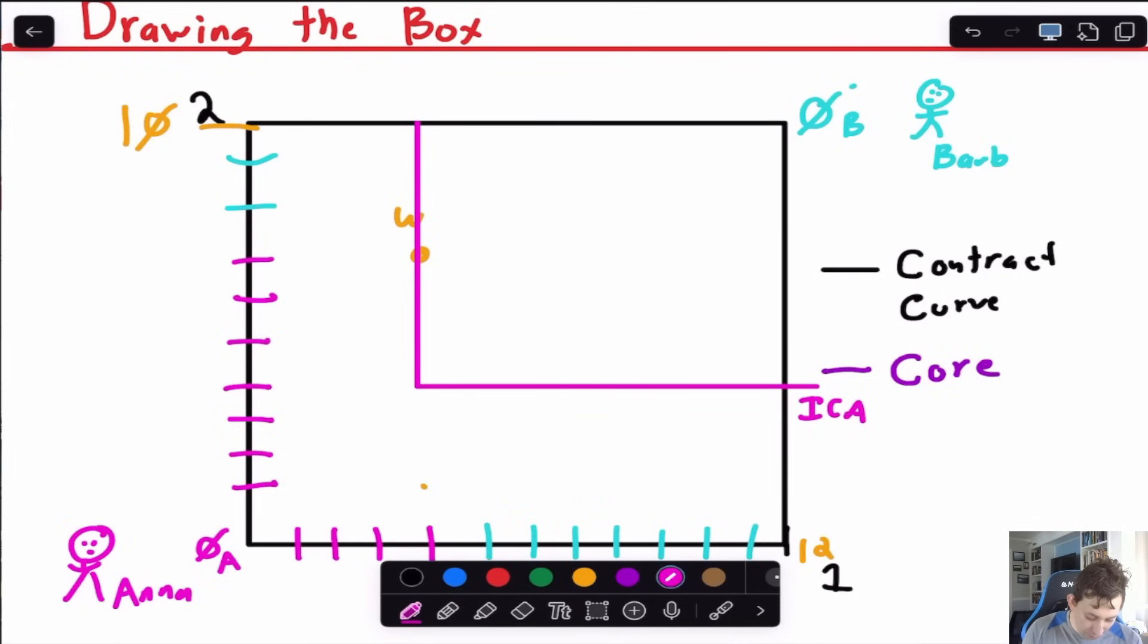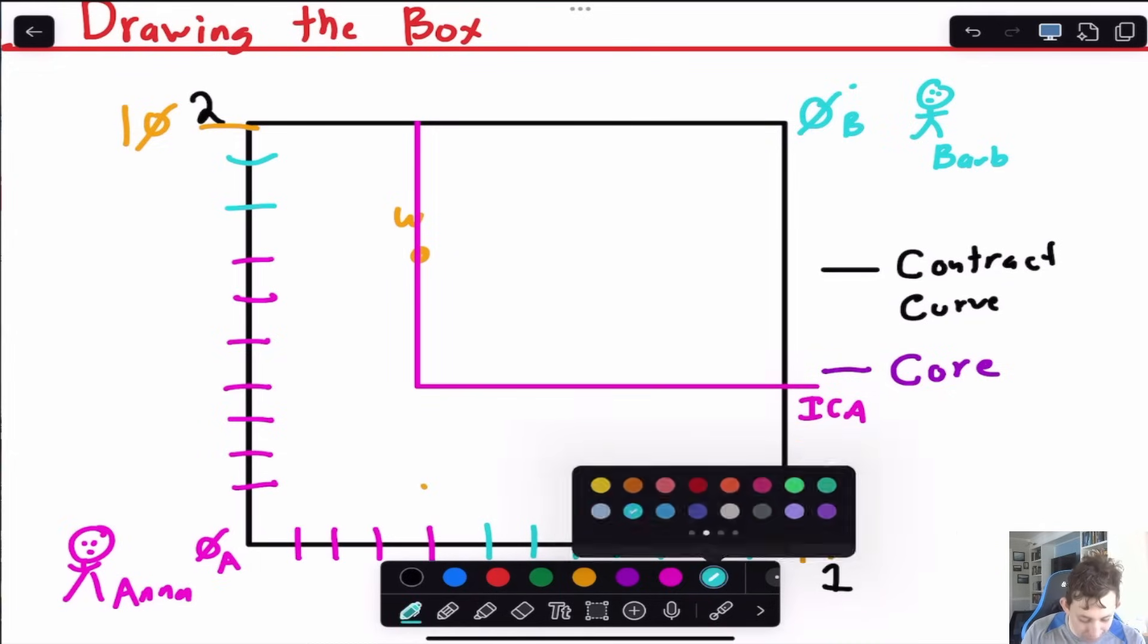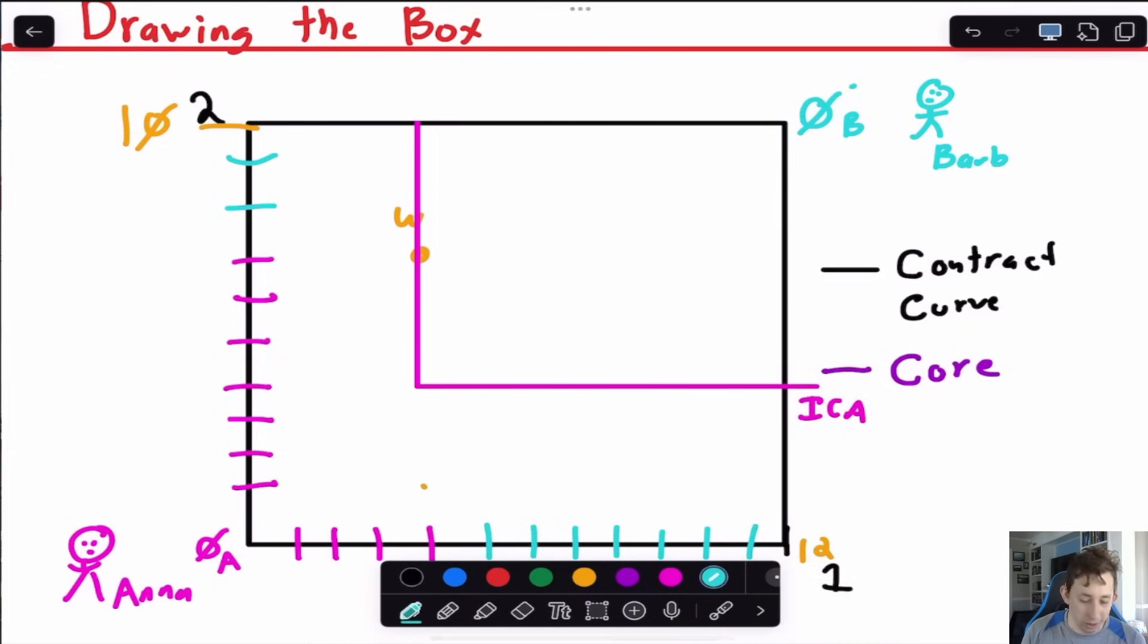What I would do if I were drawing this is I would actually flip my paper over when I draw Barb's indifference curve, because then I don't have to draw upside down. Doing this with an iPad, I don't quite have that luxury, so I'm just going to draw it upside down, something like this. My indifference curve is going to look something like this because I've got Cobb Douglas utility. That's just the box drawn step by step.